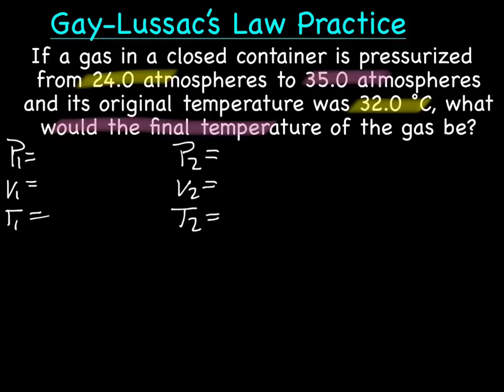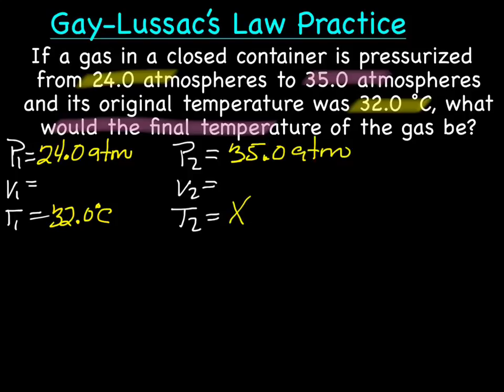Now we know who's who. Let's fill this in. Our P1 is 24.0 atmospheres, which is atm. And our temperature 1 is 32 degrees Celsius. And our pressure 2 is 35 atmospheres. And we're trying to find our temperature 2. We've got to go to our temperature. We need to change it to Kelvin. We do that by adding 32 to 273, which gives us a Kelvin temperature of 305.